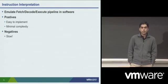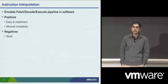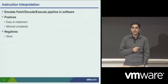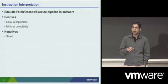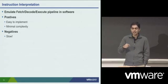One way you could imagine doing this sort of system ISA virtualization would be instruction interpretation, where the idea is you would actually emulate the fetch, decode, execute pipeline in software. You could imagine the virtual machine monitor interposing at every instruction boundary of the guest, emulating that instruction's semantics for the guest, and then passing control to the next instruction.